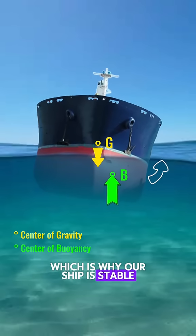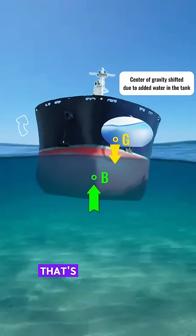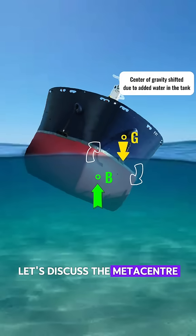Which is why our ship is stable, except if water gets in, or there's unsecured cargo, or if the tank isn't full. That's one minute, so let's discuss the metacenter, or GM, of the ship in the next videos.